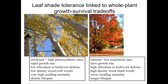Leaf shade tolerance is linked to whole-plant growth and survival tradeoffs. We get two strategies associated with a suite of different characteristics. The intolerant species, shown here as aspen trees, have high photosynthetic rates but also high respiration rates. This fuels rapid growth, and their leaves are pretty cheap so they don't allocate much to herbivore defense — if herbivores eat their leaves they just grow more. They have low-density wood, tend to have very high seedling mortality related to high light requirements, and overall these trees are shorter-lived. This is the live fast, die young strategy.